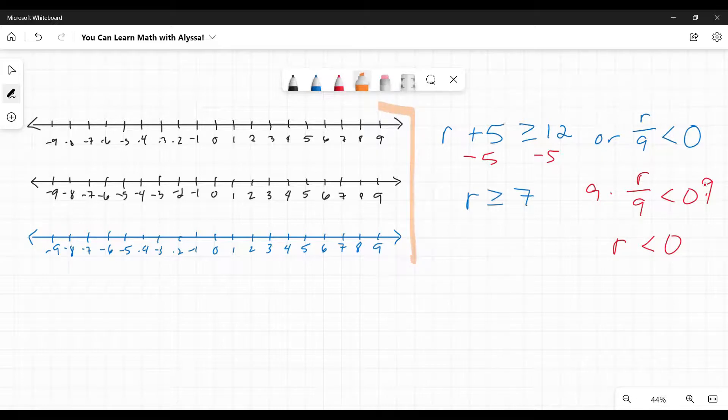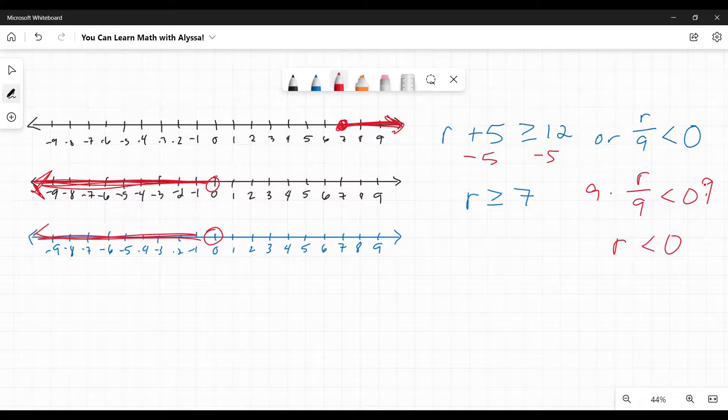Now, something to note, you don't have to draw three number lines out. And as you get more skilled, you probably won't need to. But I'm just going to do it again just to let you see what's really going on here. So r is greater than or equal to 7, have a closed circle at 7, and it goes to the right. r is less than 0, that is an open circle at 0, and it goes to the left. Or means anything that appears on either of these number lines. So my final answer, the one I'm going to submit, is going to include both of these things.